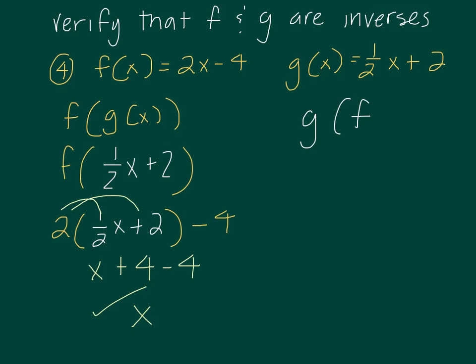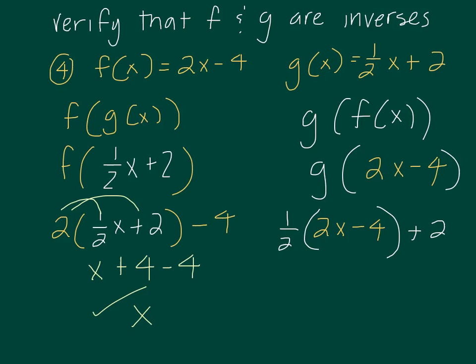Now I need to double check, what is g of f of x equal to? So if I'm going through this, g of 2x minus 4. So that means in function g, wherever there's an x, I'm replacing it with 2x minus 4. So I'm going to have 1 half times 2x minus 4 plus 2. When I go ahead and distribute, I get x minus 2 plus 2, which is x.